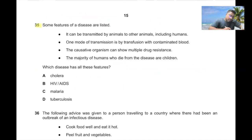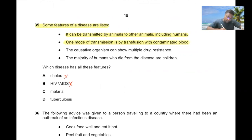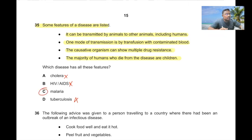Question number thirty-five. Some features of diseases are listed: it can be transmitted from animals to humans; one mode of transmission is by transfusion of contaminated blood; the causative organism can show multiple drug resistance; and the majority of humans who die from the disease are children. HIV and cholera are eliminated by these criteria. Definitely malaria. 35C is the correct answer.